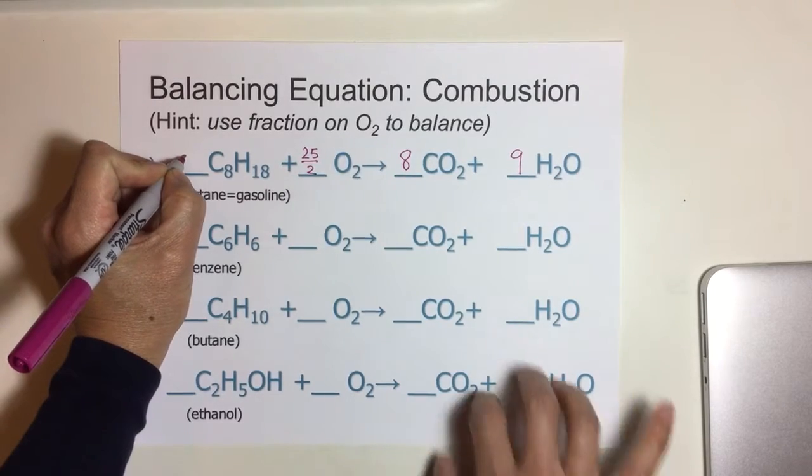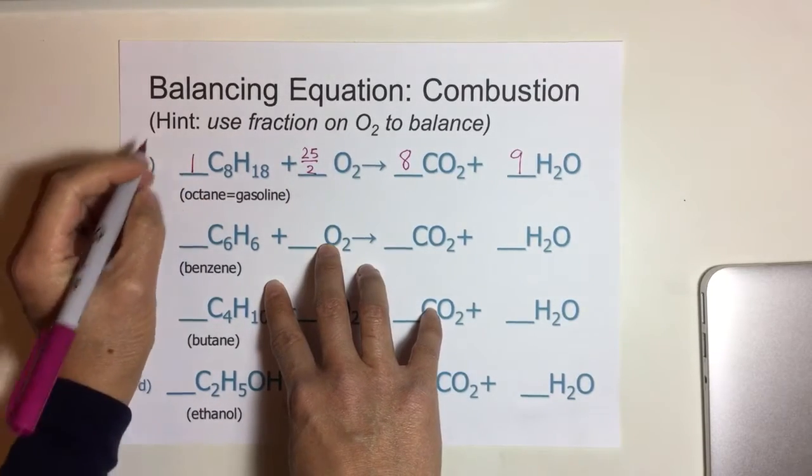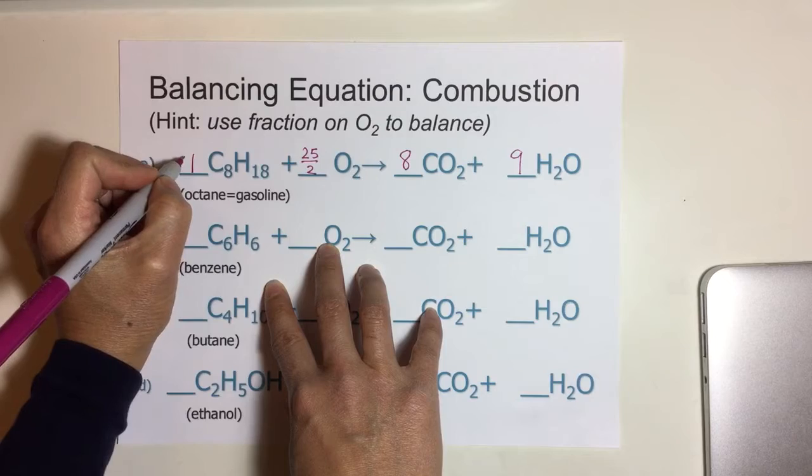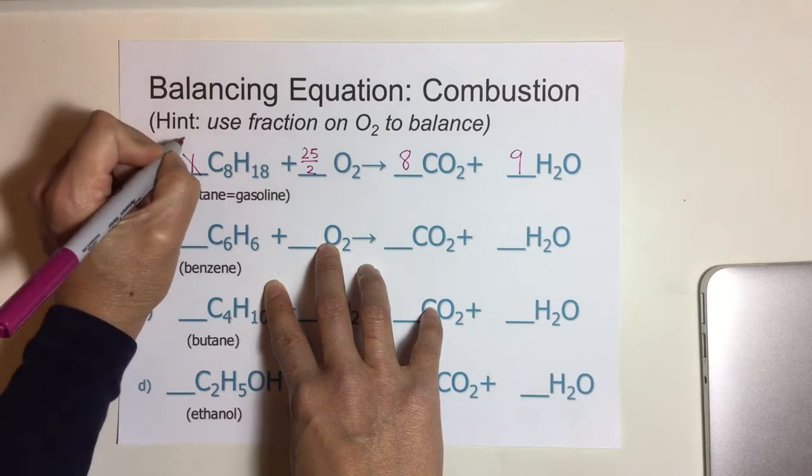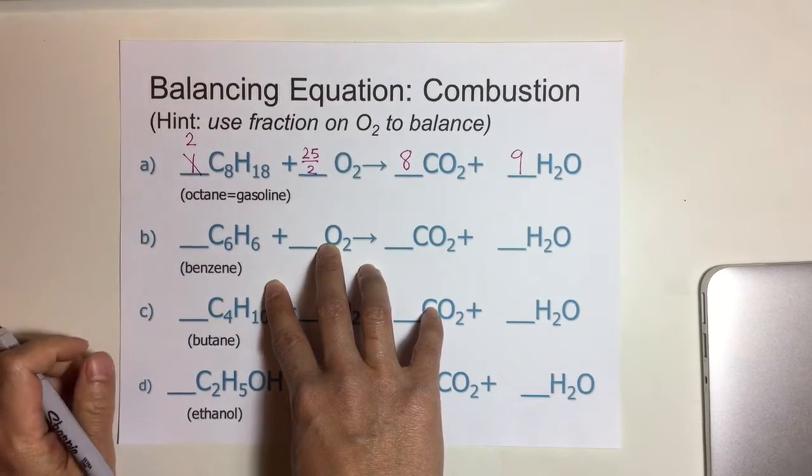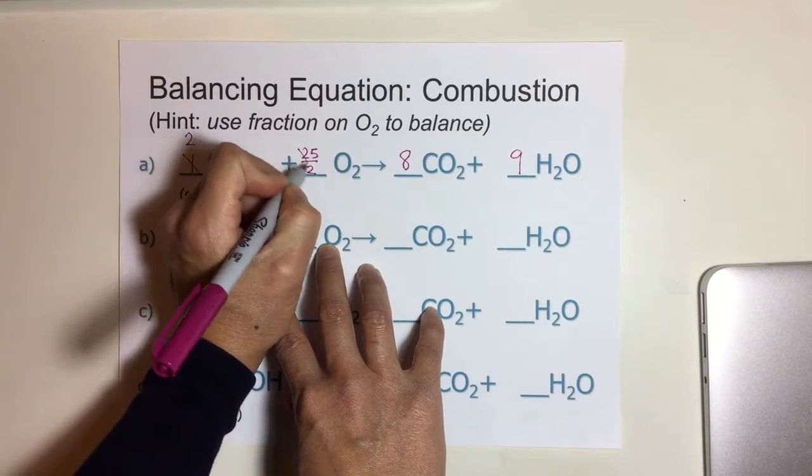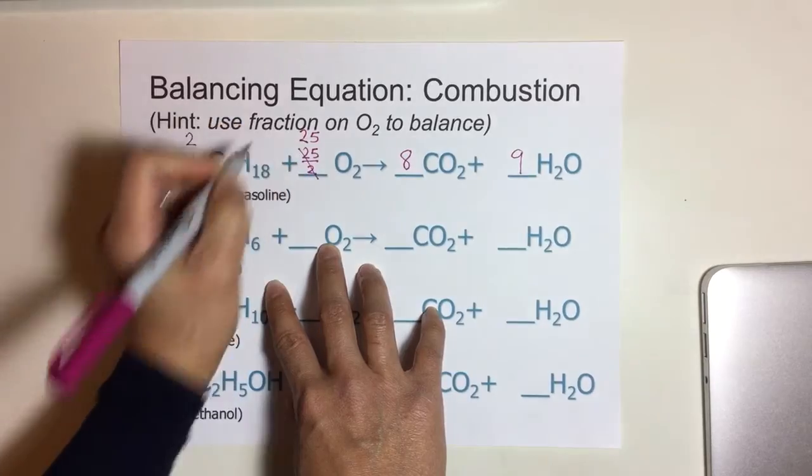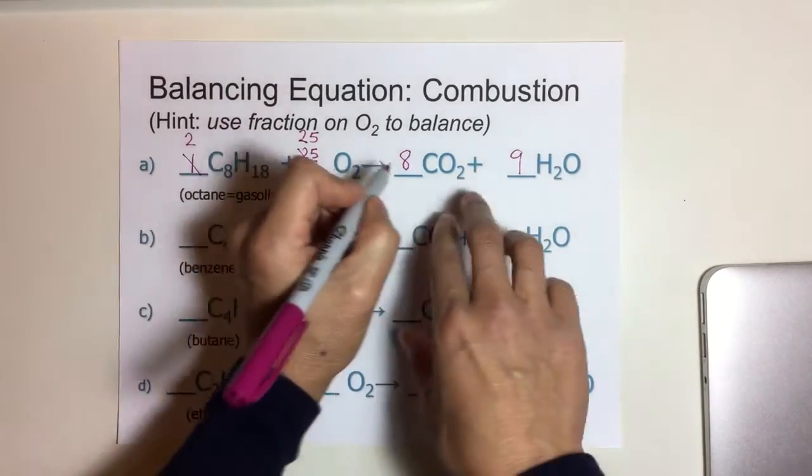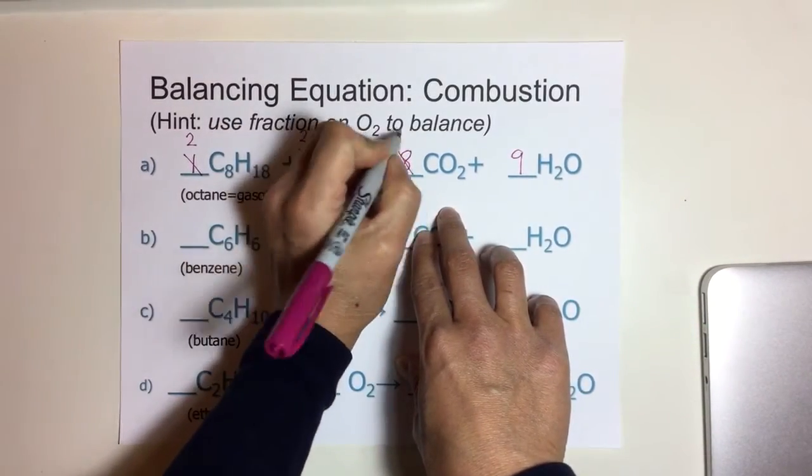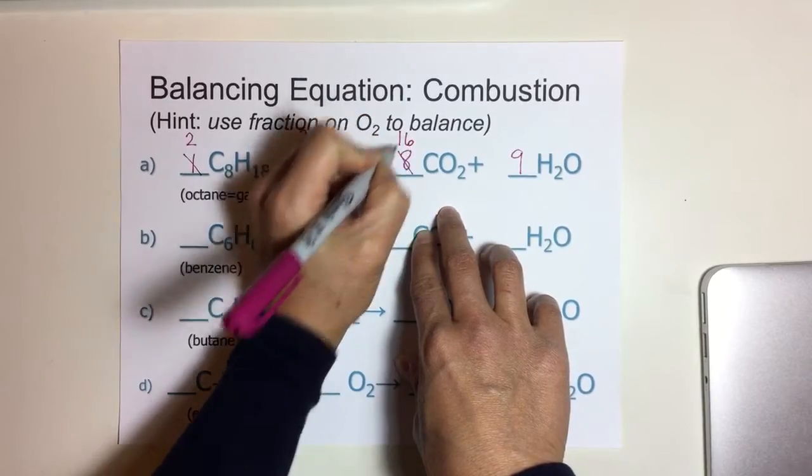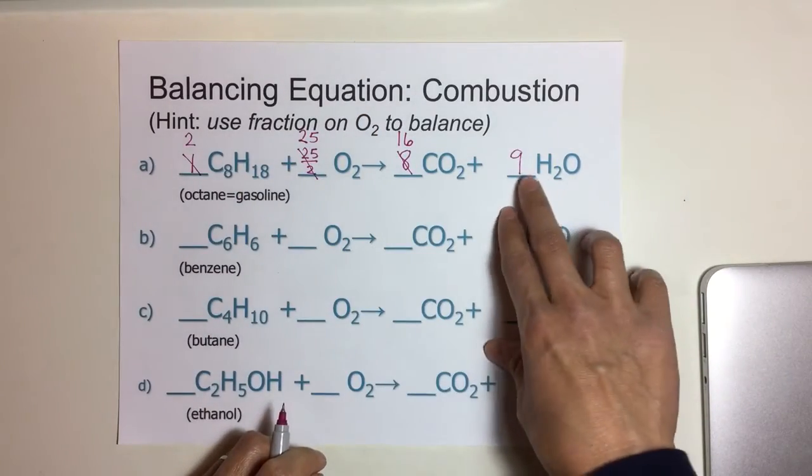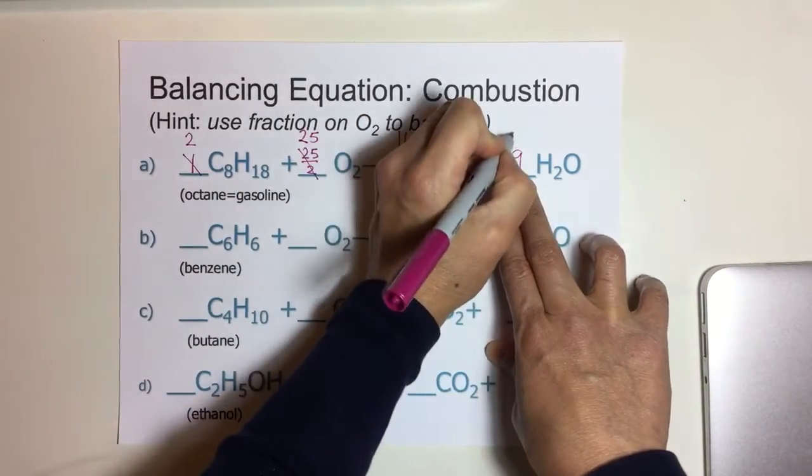In doing so, this is currently a 1 coefficient, so multiplying this by 2 I then get a 2 coefficient in the end. Multiplying this fraction by 2, you then get this out of fraction form and it becomes 25. Multiplying this by 2, you get this to be 16 rather than 8, and then multiplying this by 2 you get 18.